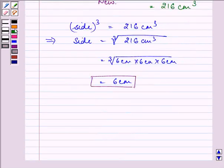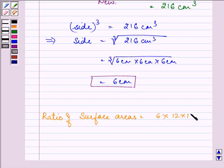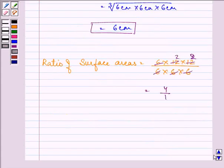Also, we need to find out the ratio of their surface areas. That is 6 into side squared, that is 12 into 12 for the bigger one, 6 into 6 into 6 for the new cube. So after simplifying, we get the answer as 4 by 1, that is 4 is to 1.